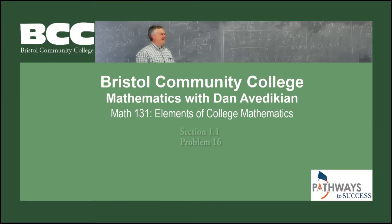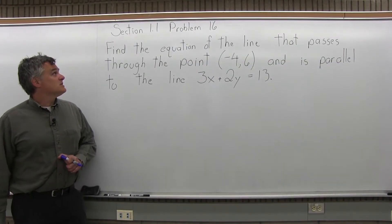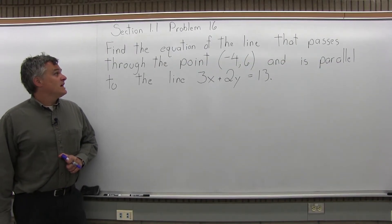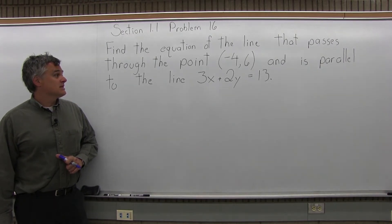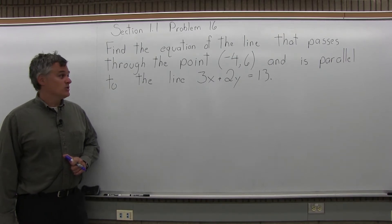Bristol Community College Mathematics with Dan Avedikian. Math 131, Elements of College Mathematics, Section 1.1, Problem 16. Find the equation of the line that passes through the point negative 4, 6 and is parallel to the line 3x plus 2y equals 13.